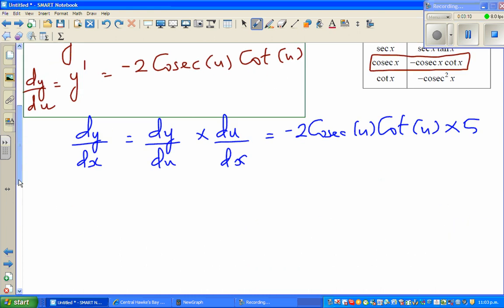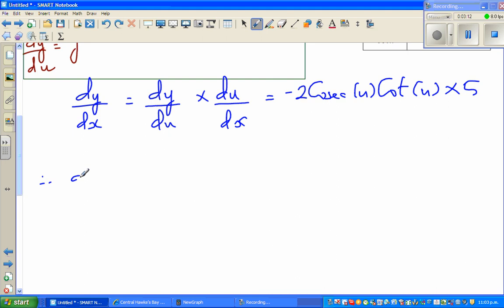Therefore, I can say dy/dx is minus 10 cosec 5x times cot 5x. So this is your answer.